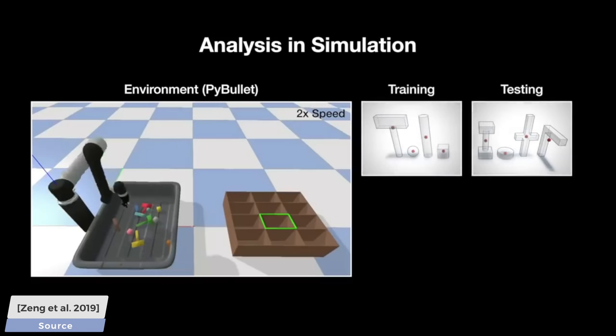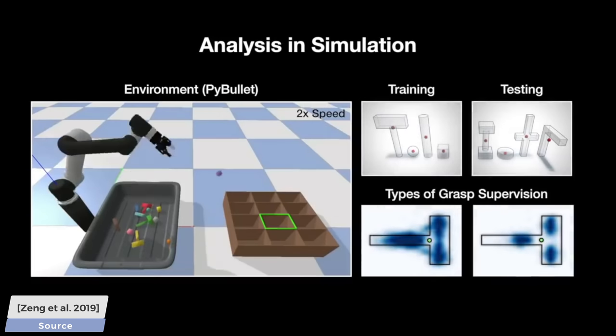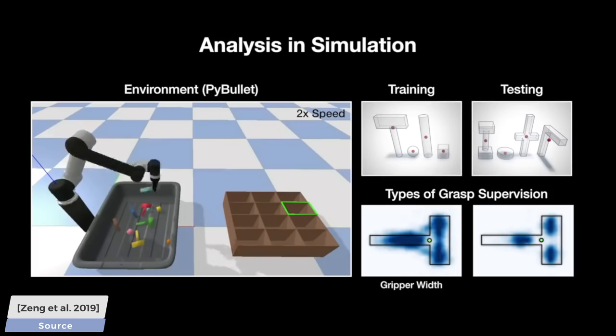A simulation environment was also developed for this project where one can test the effect of, for instance, changing the gripper width, which would be costly and labor-intensive in the real world. Of course, these are all free in a software simulation. What a time to be alive!